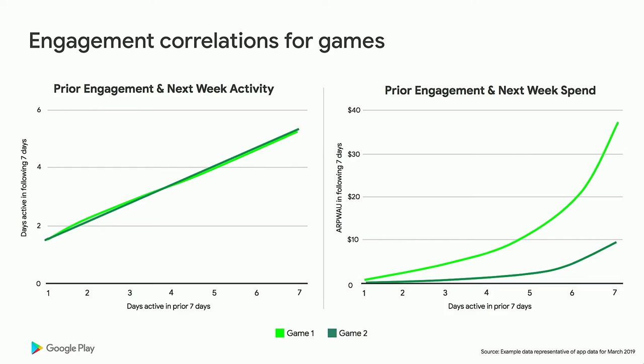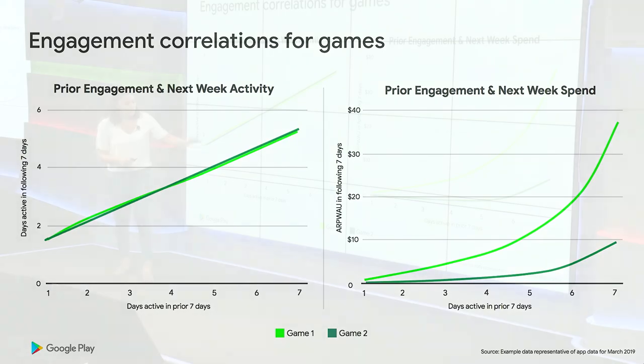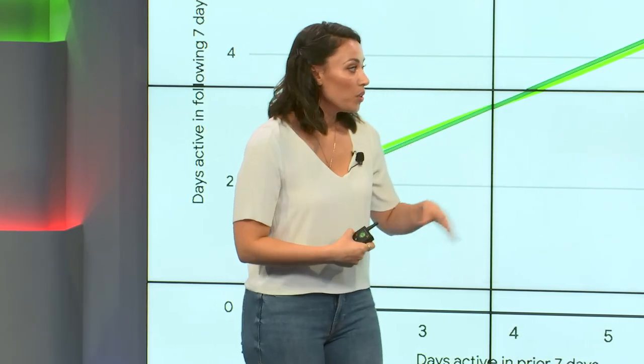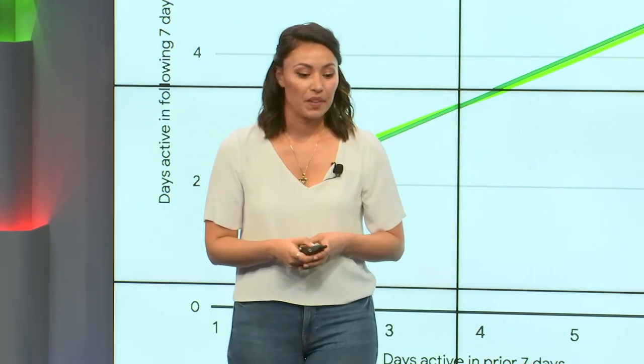Starting with games: users with higher engagement in the prior period drive stronger monetization and engagement in the future period. The left graph shows the correlation between prior week engagement and following week engagement — for both games, users active five of the last seven days will average about four days of activity in the next seven. The right graph shows prior week engagement against average revenue per weekly active user in the following seven days. In both examples, a user who logs in every day of the week will spend two times as much as users who log in six of the seven days.